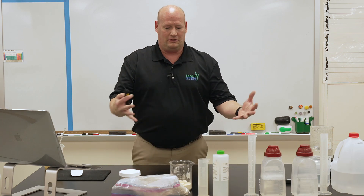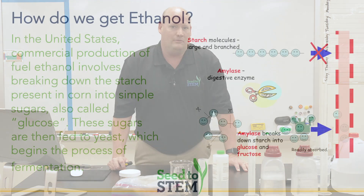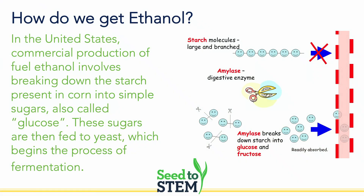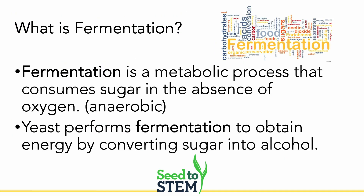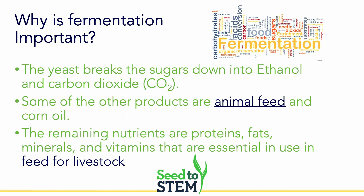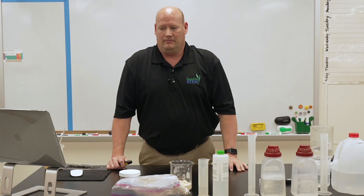So how do we get ethanol? It is created through the process of fermentation, where we break down the starches in the corn into glucose, and then we feed those sugars to yeast, which starts the fermentation process. Fermentation is a metabolic process that consumes sugar in the absence of oxygen. Yeast performs fermentation by converting sugar into alcohol. What is left after the ethanol is produced and pulled off through distillation is the DDG.